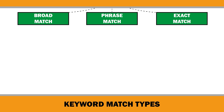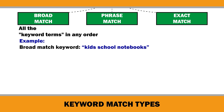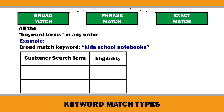The first keyword match type is broad match. If you choose broad match in your Amazon ads campaign, the search term will match if it contains all the keyword terms in any order. Broad match also includes singulars, plurals, variations, synonyms, and related terms as determined by the meaning of the keyword and the context of the advertised products. For example, if your broad match keyword is kids school notebooks, your ads may appear in search results for school notebooks for kids.